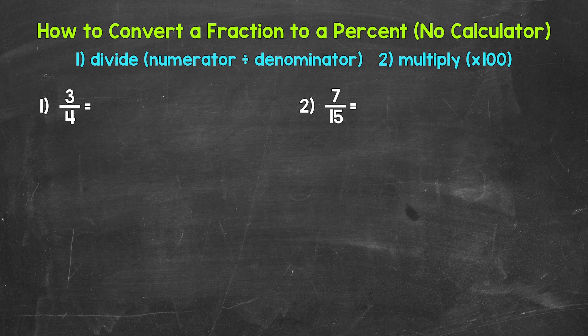Let's jump into our examples, starting with number one, where we have three fourths. We need to start by dividing the numerator by the denominator — three divided by four. So let's come down here and set this up: three divided by four.